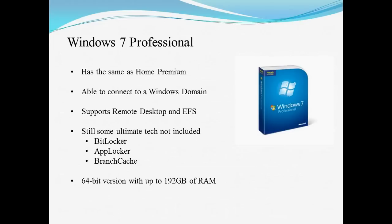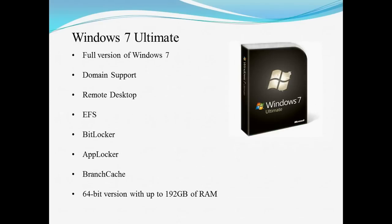The next version is Windows 7 Professional. It has the same functionality as Home Premium but also has the capability of connecting to a Windows domain. A Windows domain is basically a Windows server with a number of computers connecting to it so that vast amounts of information can be shared. This also supports Remote Desktop and EFS, which is the Encrypting File System — this allows you to give each file its own encryption. There is still no Ultimate Tech with this version, such as BitLocker, AppLocker, and Branch Cache. There is however a 64-bit version with the capability of taking up to 192GB of RAM.